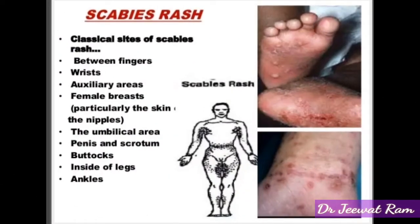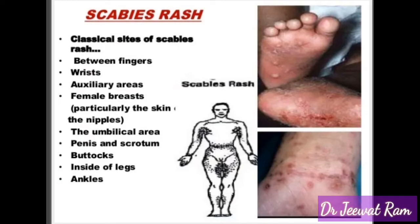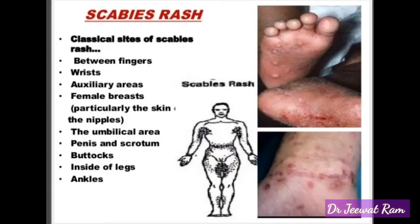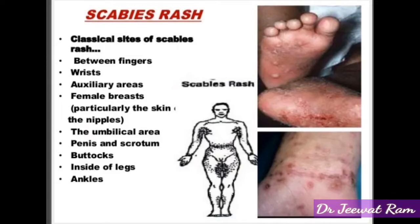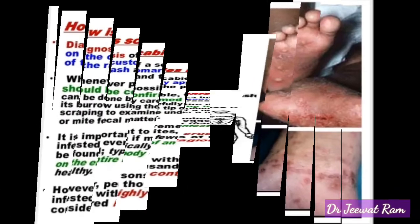Classical signs of scabies rash include rash between the fingers, wrists, axillary areas, female breasts (particularly the skin and the nipples), the umbilical area, penis and scrotum, buttocks, inside of legs, and ankles.